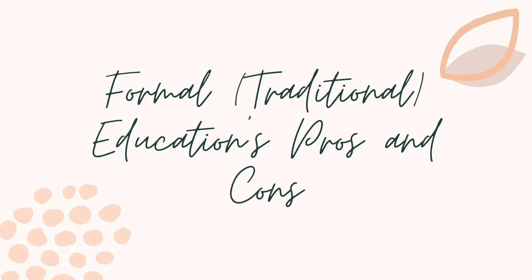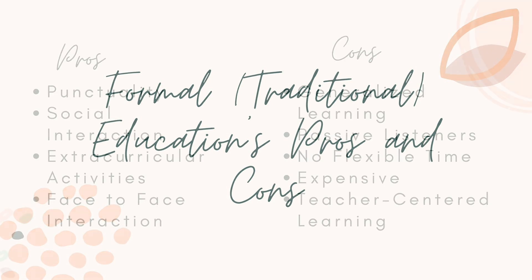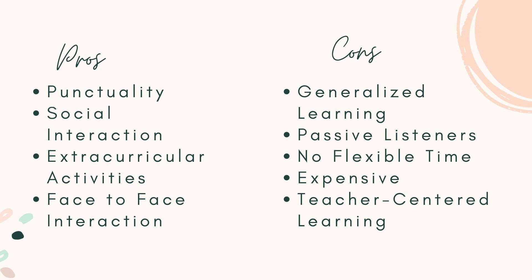Now let's proceed to the pros and cons of formal or traditional education. First, the advantages. The first is punctuality — students are required to arrive at school at specific times, which helps instill discipline and time management skills. By following a set timetable, students learn to prioritize their tasks and develop a sense of responsibility. The next is social interaction: students attend classes with peers, engage in discussions, collaborate on group projects, and participate in extracurricular activities, fostering interpersonal skills, teamwork, and the ability to build relationships.